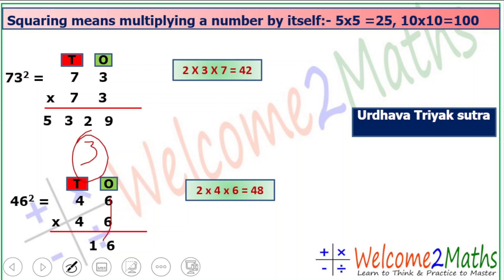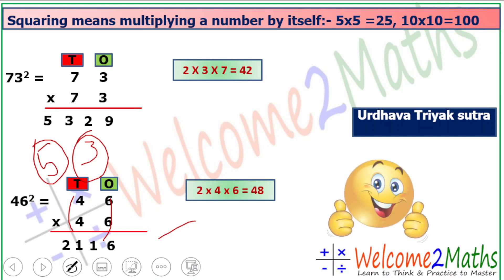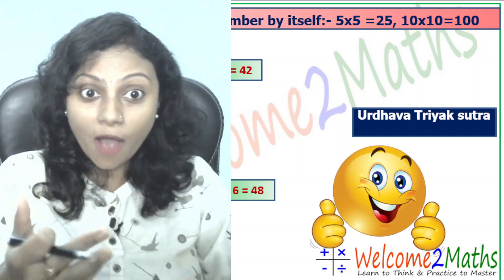Next step: we multiply the tens place digits, 4 and 4. 4×4=16, but we add the carry also. 16+5=21. This is our square. So 46 squared is 2116. We got our square. How is the method?